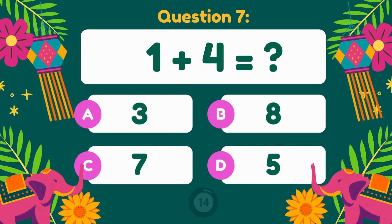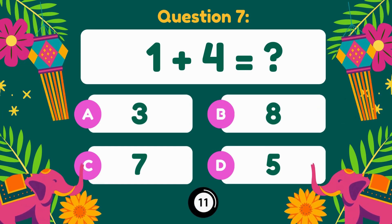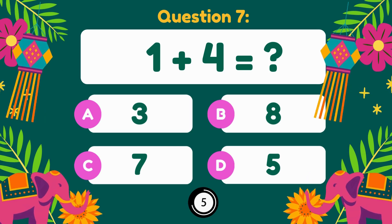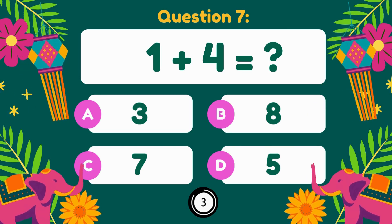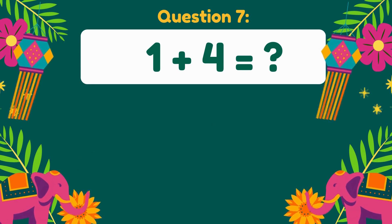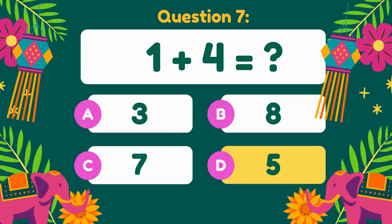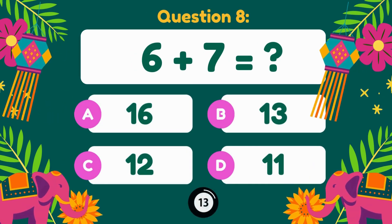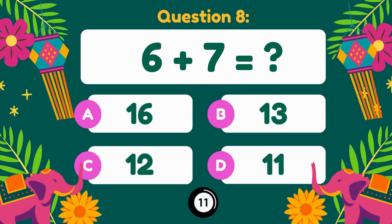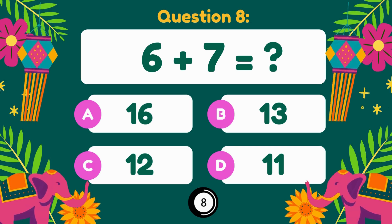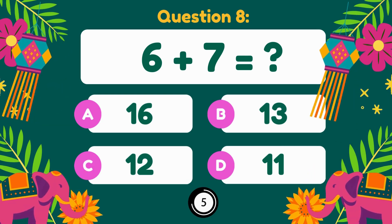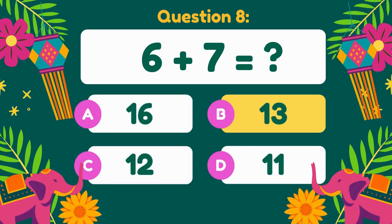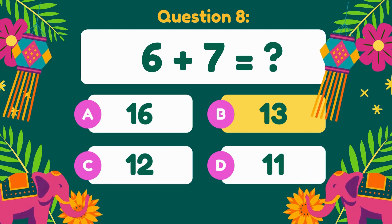1 plus 4 equals. 1 plus 4 is equal to 5. 6 plus 7 equals. 6 plus 7 is equal to 13.